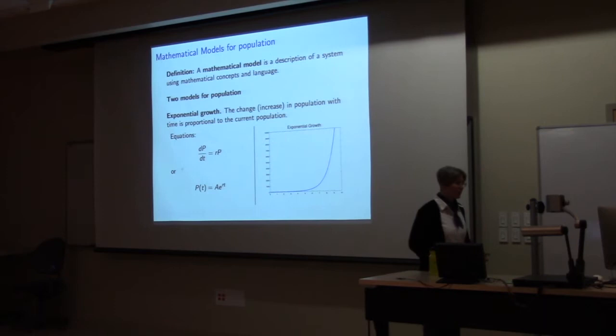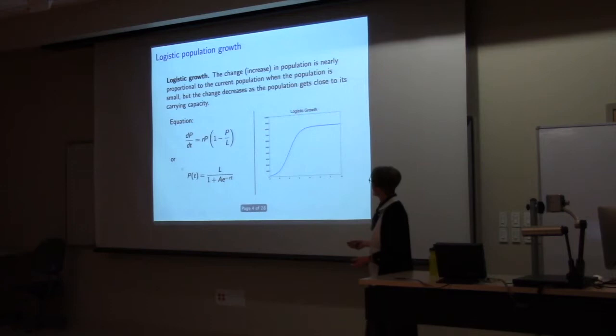If you want a slightly fancier model for population, you might look at what's called the logistic growth curve. That says the change or increase in population is nearly proportional to the current population when the population is small, but the change decreases as the population gets close to carrying capacity. Notice that the only change is this term right here. So when P is very small, P over L, if L is big and P is small, this piece is close to zero, so we've got exponential growth. But when P gets close to L, the change goes to zero.